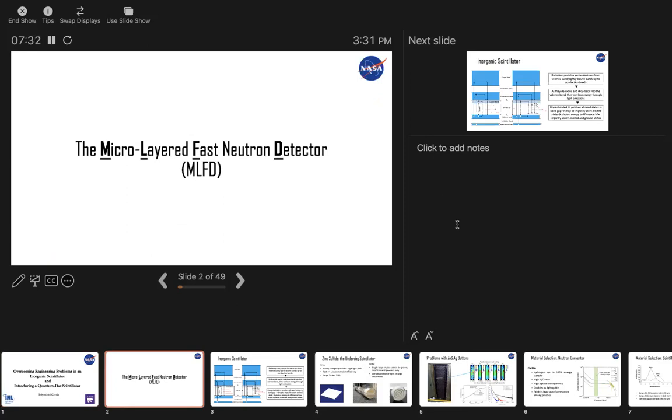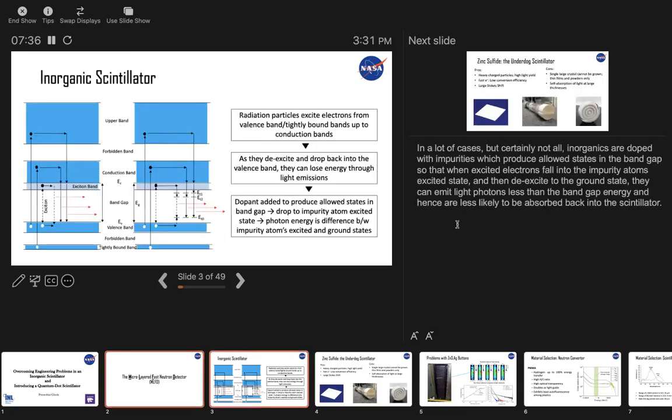So the first detector I'm going to talk about is called the micro-layered fast neutron detector. So in a scintillator, radiation particles excite electrons from the valence band or the tightly bound bands up to the conduction bands. And as they de-excite, they drop back into the valence band and they can lose energy through light emissions.